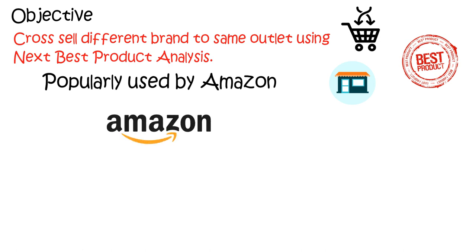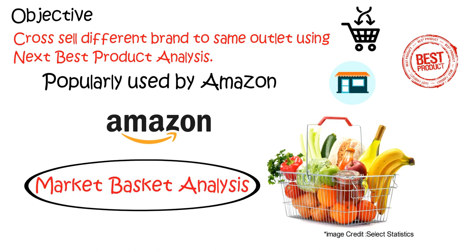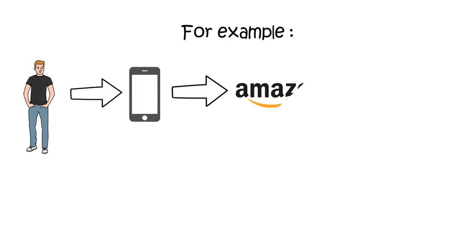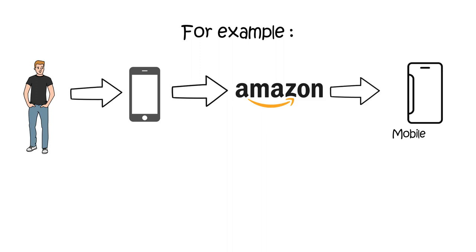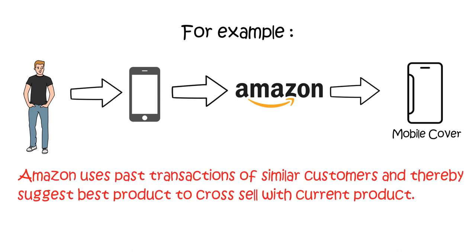This analysis is also called market basket analysis. For example, if you purchase a mobile from Amazon, it will suggest 'people who purchased this product also purchased a mobile cover.' For suggesting the mobile cover, Amazon uses past transactions of similar customers and thereby suggests the best product to cross-sell with the current product.